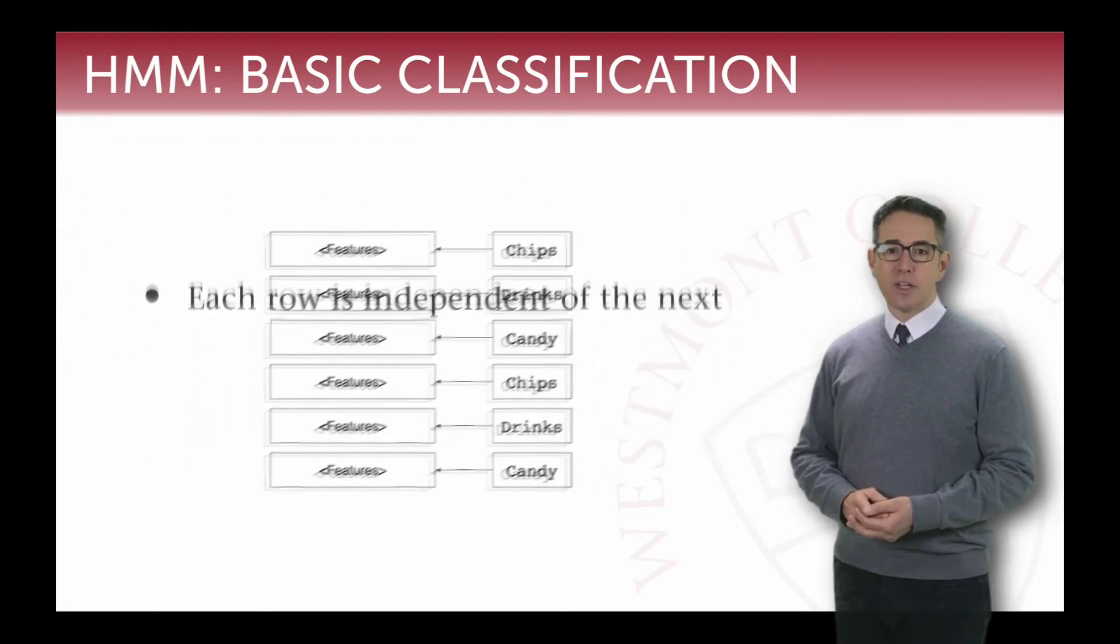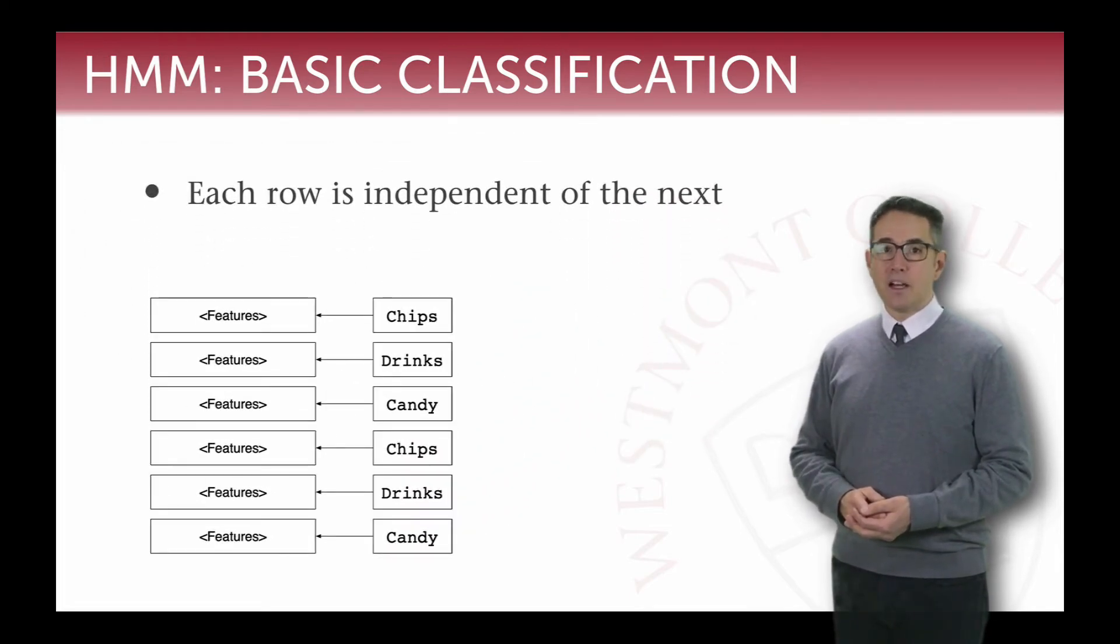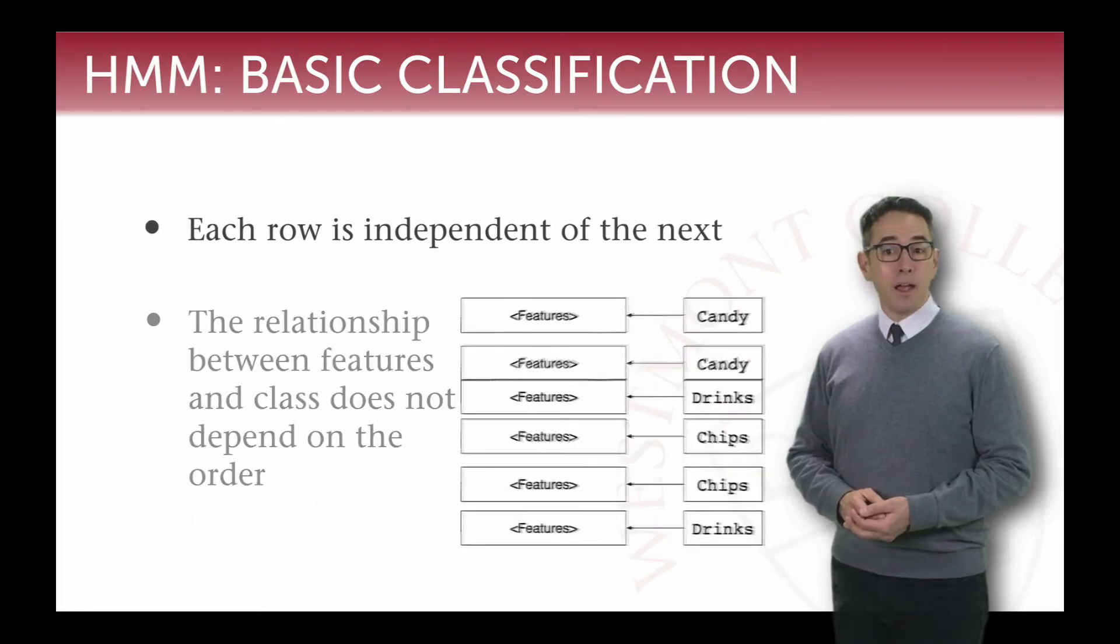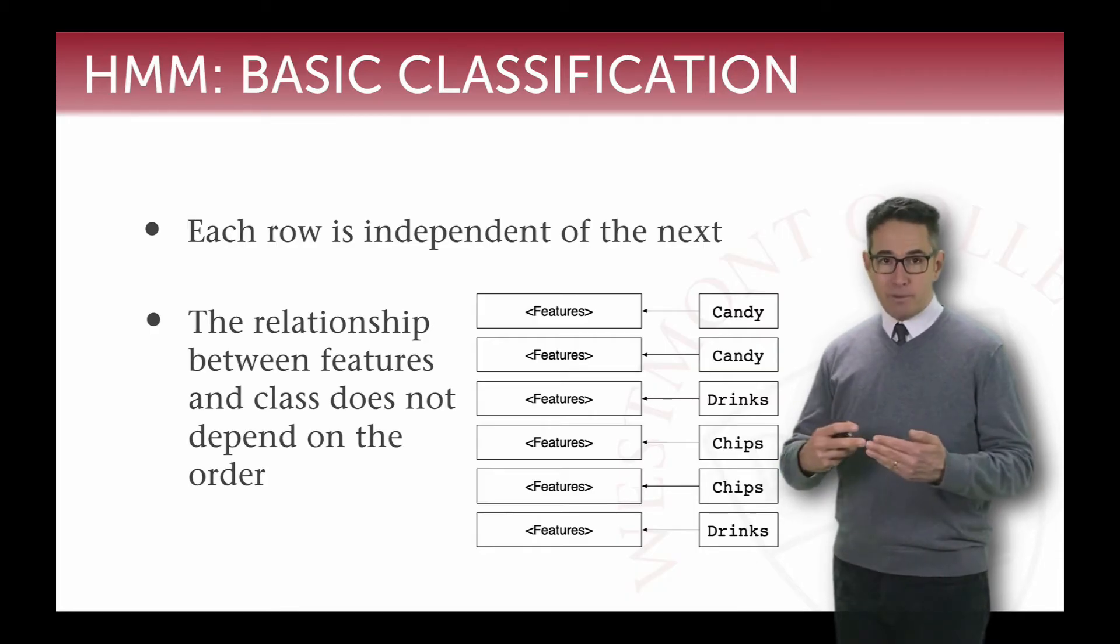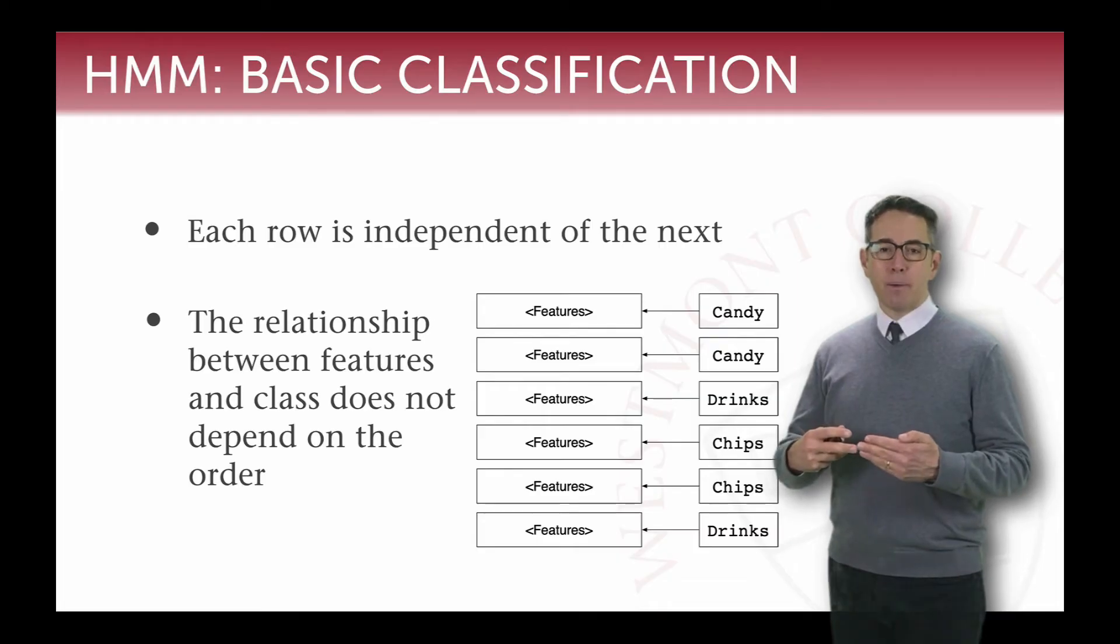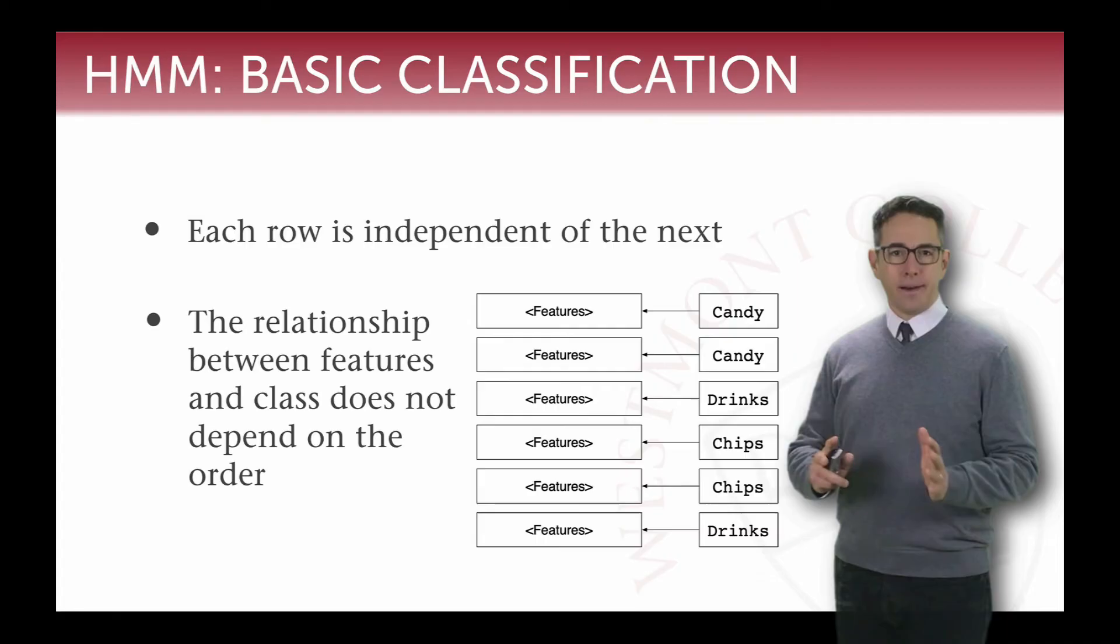Nevertheless, those rows are independent of the next. So if we were to shuffle them up, any of the features and the class have to remain coupled. That would be keeping the integrity of the row. But the relationship between each individual, the model doesn't depend on the ordering.